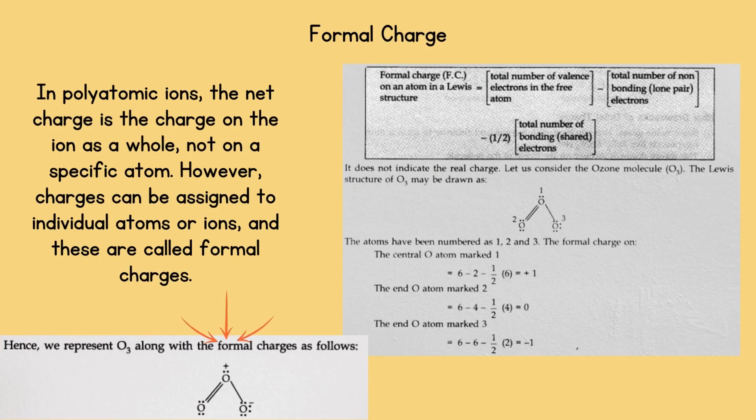Formal charge. In polyatomic ions, the net charge is the charge on the ion as a whole, not on a specific atom. However, charges can be assigned to individual atoms or ions and these are called formal charges. Formal charge on an atom in a Lewis structure equals total number of valence electrons in the free atom, subtracted by total number of non-bonding electrons (lone pair), subtracted by 1/2 times total number of bonding electrons (shared electrons).